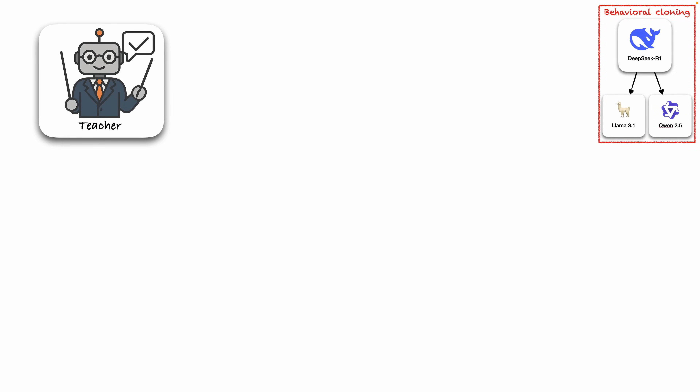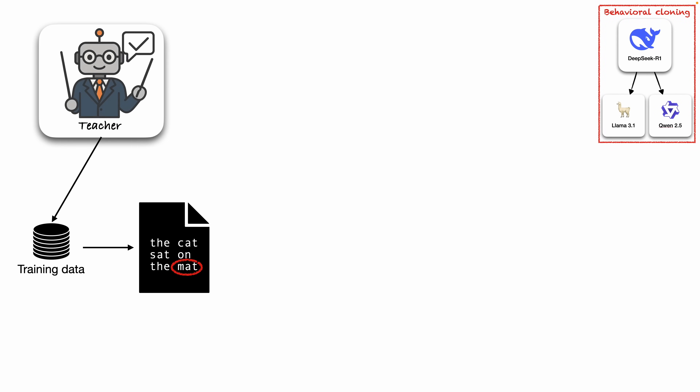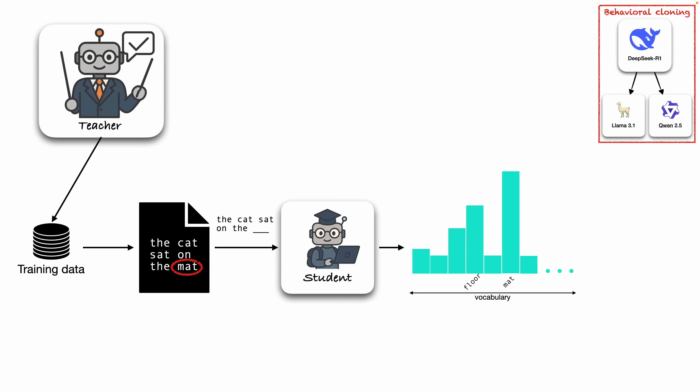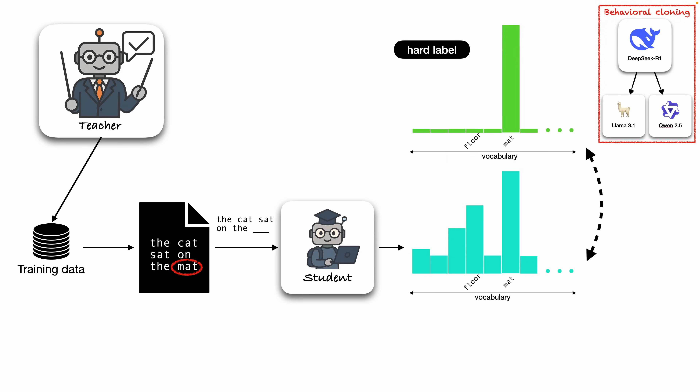Now let's take a look at what DeepSeek R1 calls distillation. Instead of starting from a pre-collected dataset, they ask the teacher to generate it. Then they train the student using regular next-word prediction. But here's the main difference: the labels aren't soft anymore — they're just one-hot. So 'mat' gets 100% of the probability. There's no dark knowledge being passed. The student is simply learning to imitate the teacher's final outputs, not the reasoning behind them. That's why I would rather call it behavioral cloning.